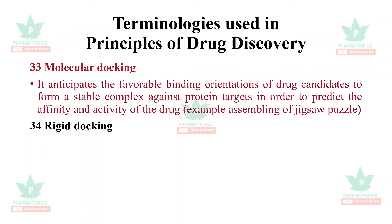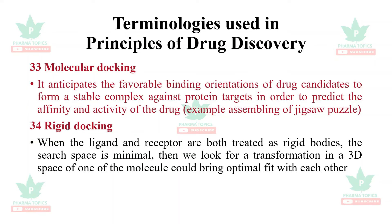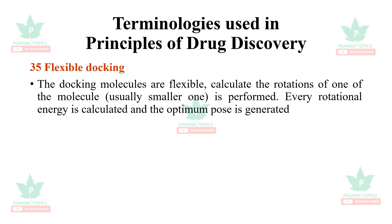Rigid docking: when both the ligand and receptor are treated as rigid bodies, the search space is minimal; we look for a transformation in 3D space that brings an optimal fit. Semi-flexible docking: one molecule — usually the protein — is kept rigid, while the ligand is allowed to flex. Flexible docking: both the protein and the ligand may be flexible.